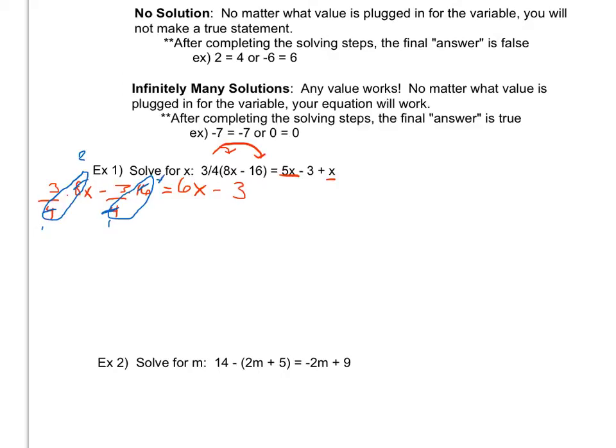So now I'm going to go ahead and actually do that multiplication. 3 times 2x is 6x. Notice I do not have to put the 1 on the bottom. 3 times 4 is 12 = 6x - 3.